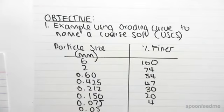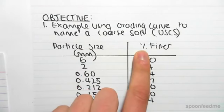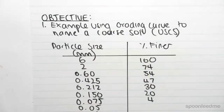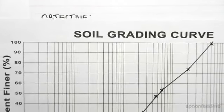So as always, I've prepared an example with particle size against percent finer, and what we're going to do is graph this on a soil grading curve.